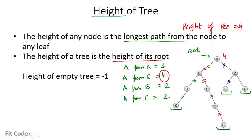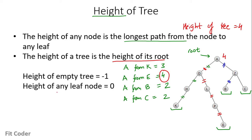There are some properties to note: the height of the empty tree is -1, and the height of any leaf node is 0, because the reference point is the leaf node itself.